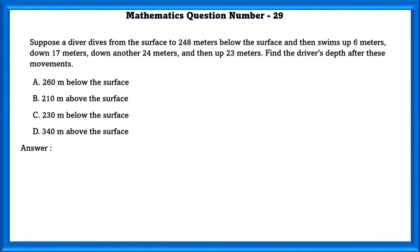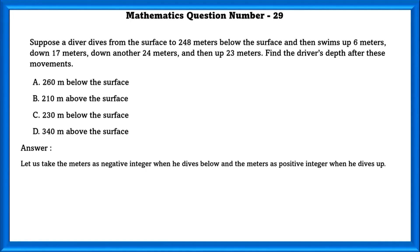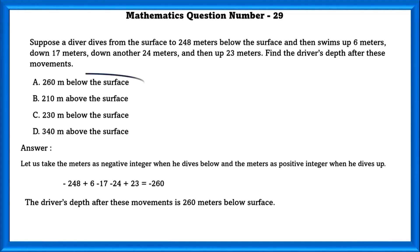Mathematics question number 29. A diver drives from the surface to 248 meters below the surface, then swims up 6 meters, down 17 meters, down another 24 meters and then up 23 meters. Find the diver's depth after these movements. Taking downward as negative and upward as positive: −248 + 6 − 17 − 24 + 23 = −260 meters, which is 260 meters below the surface.